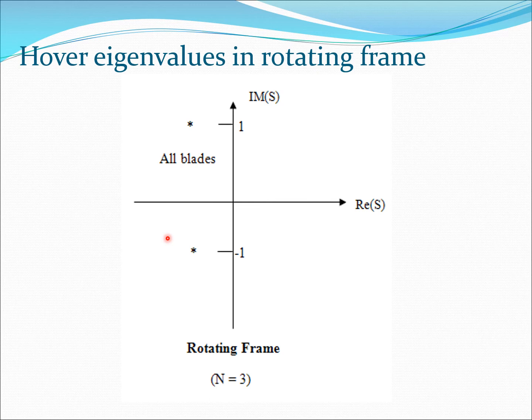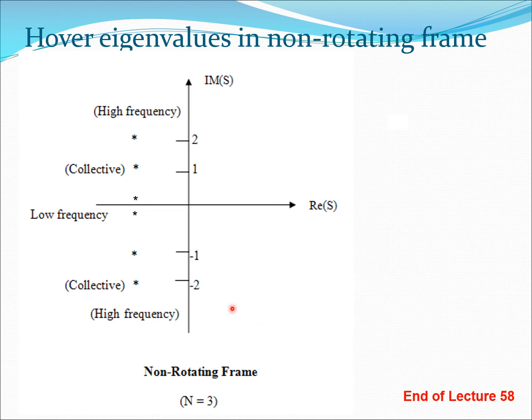Some of you are familiar, this is a root locus type of diagram. What happens in the non-rotating frame is that some of these remain in the same location and the remaining ones get shifted. So you get the high frequency mode, you get the low frequency mode, the collective mode remains somewhere around one here. So this is the approximate type of diagram which you get in the non-rotating frame. And again, the important thing is that the real part remains well damped. It's well onto the left-hand side of the axis here. We know this is a stable zone in a typical root locus type of plot.